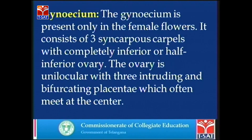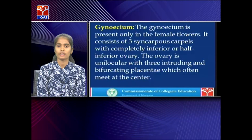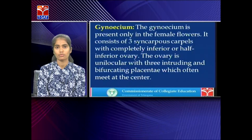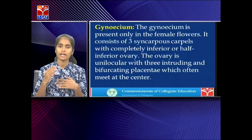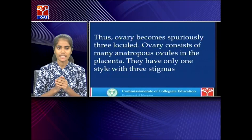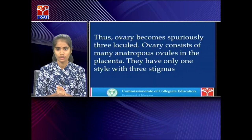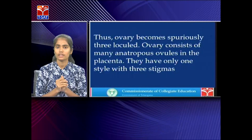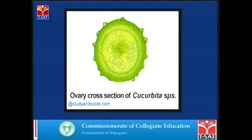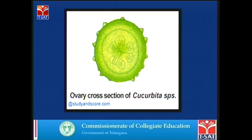The gynoecium is the female reproductive organ, present in female flowers. It has 3 syncarpous carpels with a completely or half-inferior ovary. The ovary is unilocular, but because of 3 intruding and bifurcating placentae meeting at the center, it appears as 3 locules — a false trilocular condition. The ovary has many anatropous ovules. There is 1 style but 3 stigmas. The cross section shows the false 3-locule structure in Cucurbita.